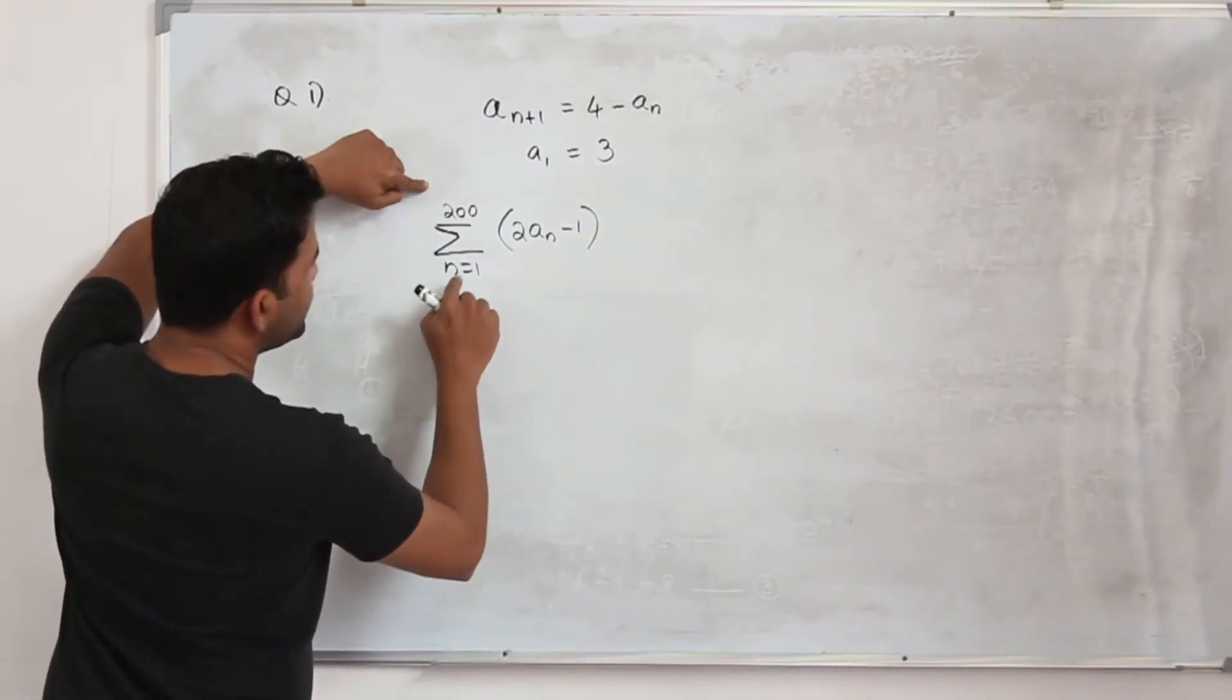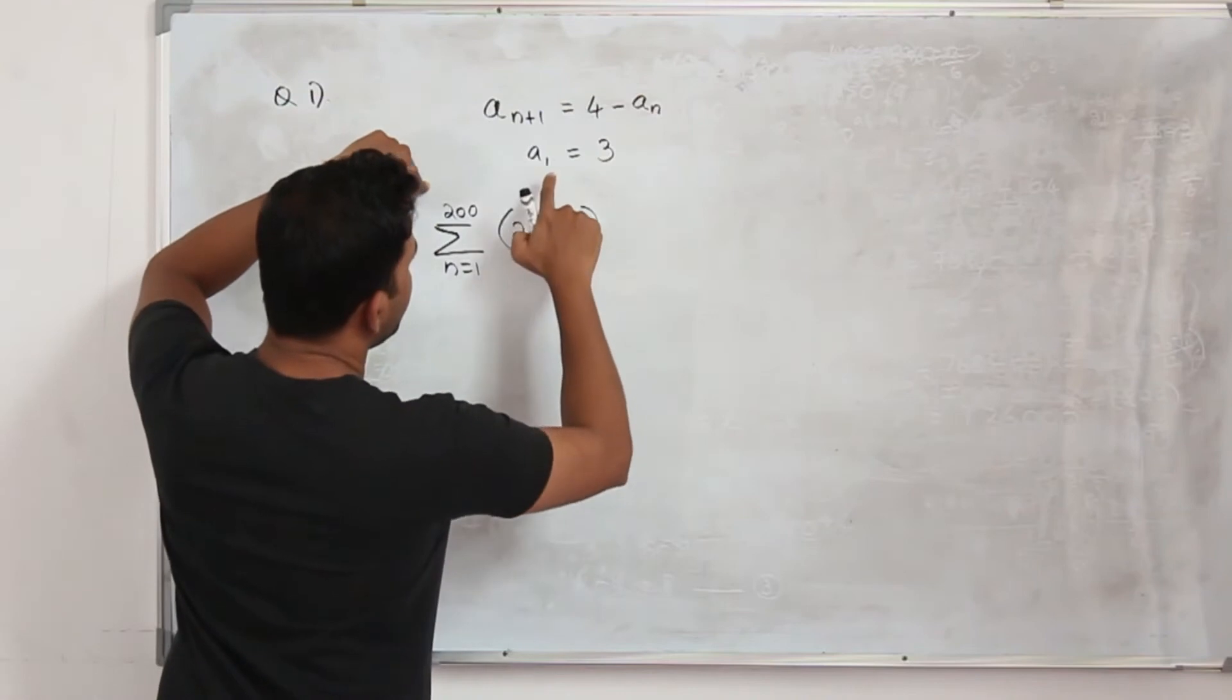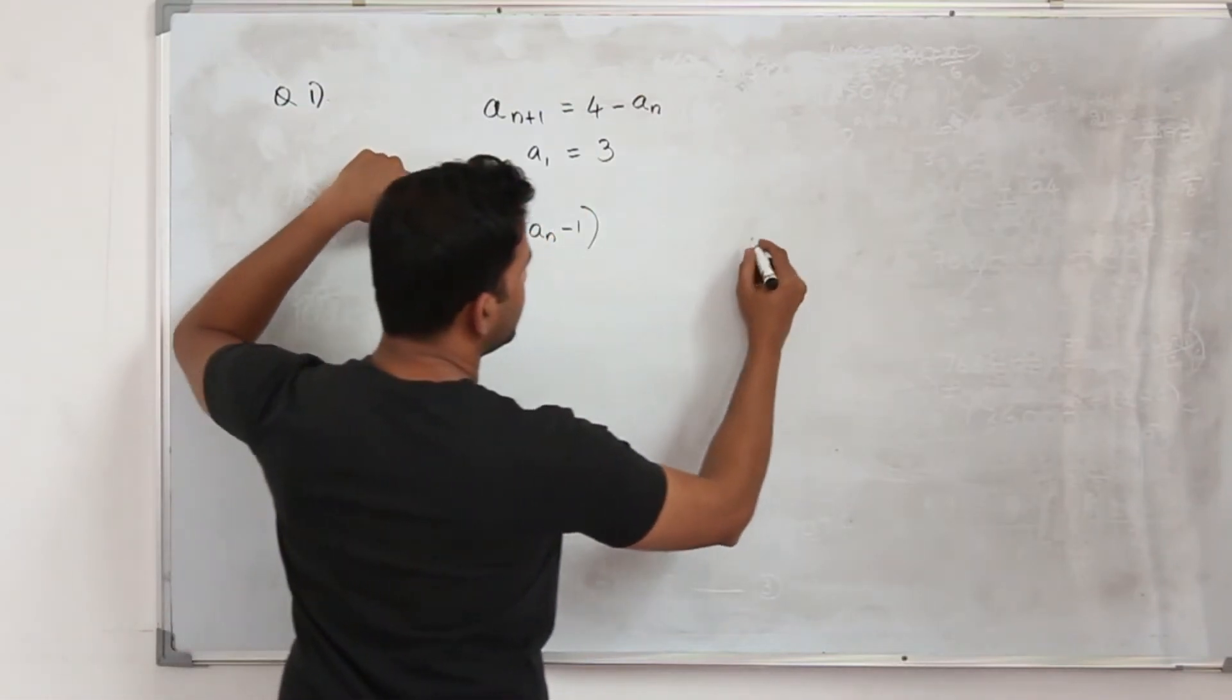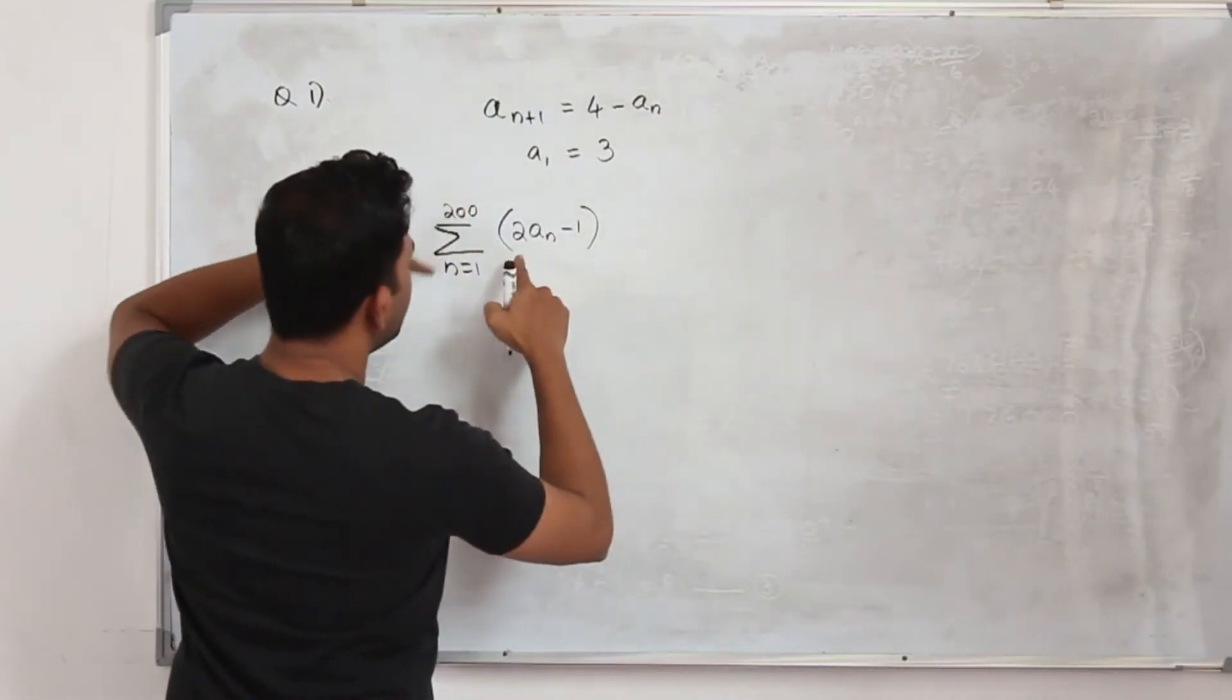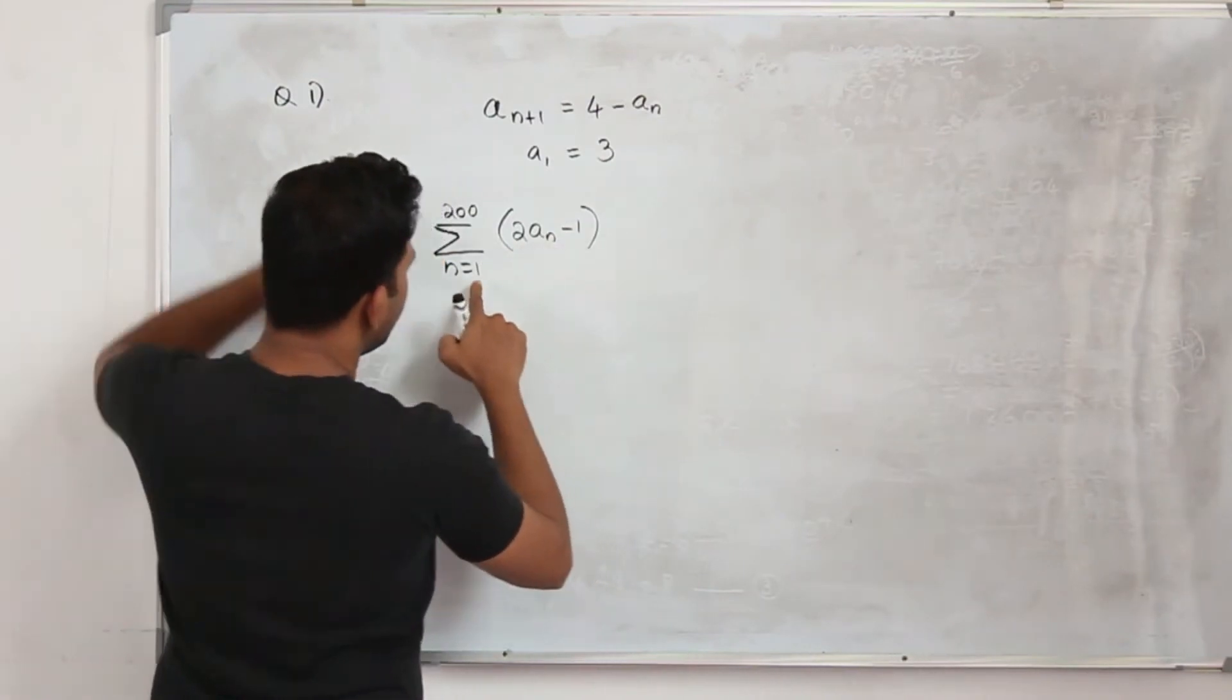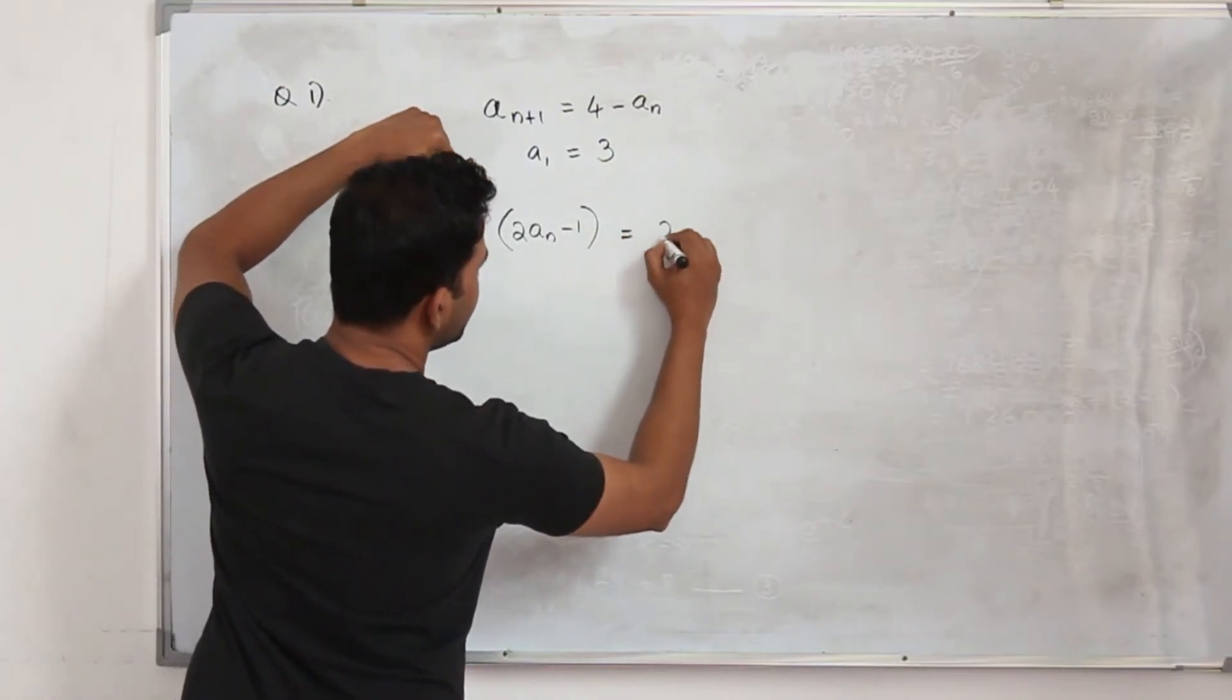Part b, they want you to find the summation of this series. So if you take a₁ as 3 and substitute here, take it as a₁ is 3, so your a₂ will be—when you substitute n is equal to 1—which is 2a₁.